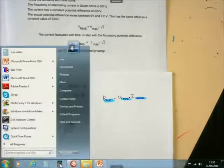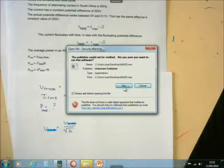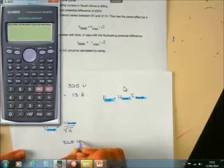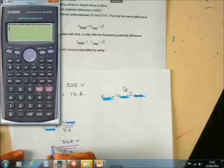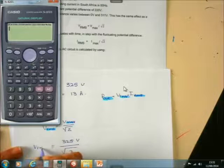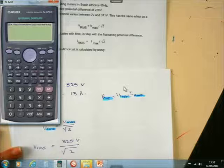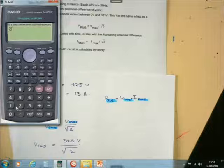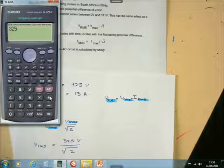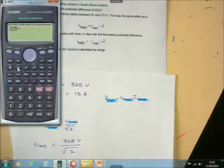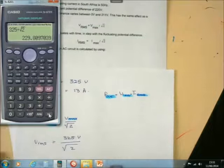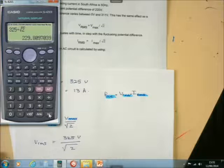Let's quickly find the calculator. So, Vmax is equal to 325 volts over the square root of 2.